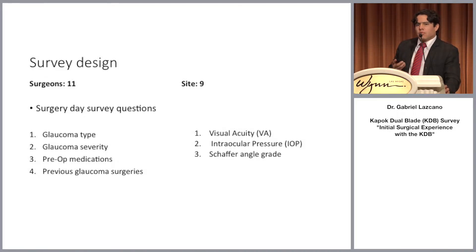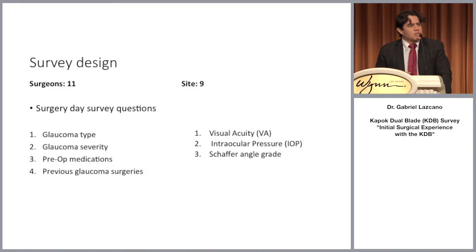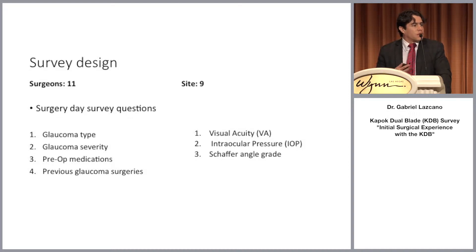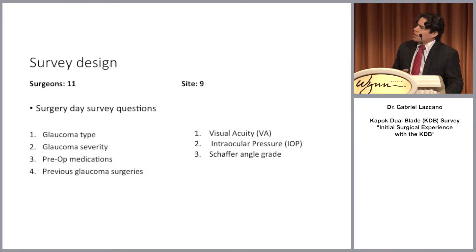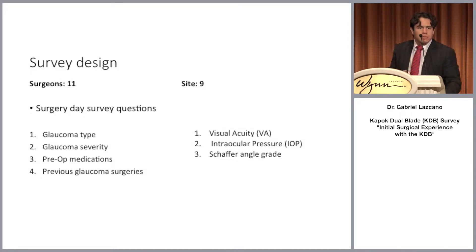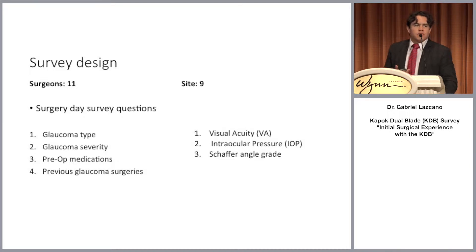We have data related to the development of the disease, such as glaucoma type, glaucoma severity, the number of glaucoma medications, or previous glaucoma surgeries, and data related to the physical examination, such as visual acuity, IOP, and the angle opening using the Schaffer scale.